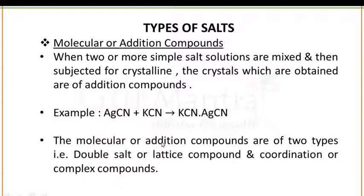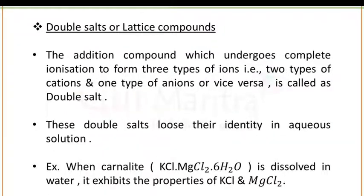The molecular or addition compounds are of two types: number 1 is double salt or lattice compound and number 2 is coordination or complex compounds. A double salt or lattice compound is the addition compound which undergoes complete ionization to form three types of ions — two types of cation and one type of anion, or vice versa.